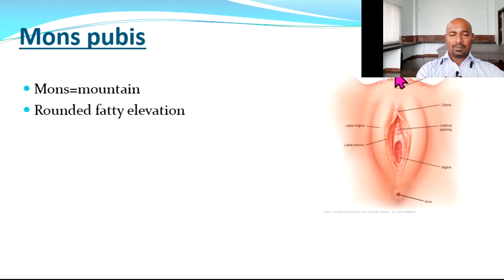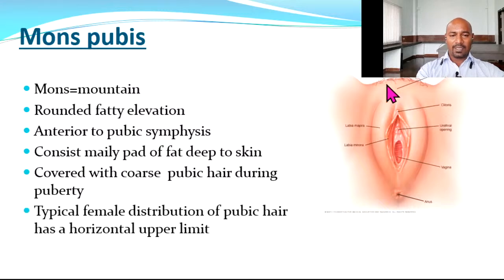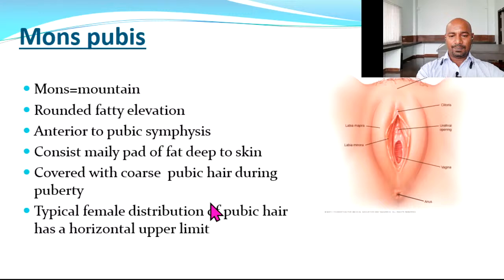Mons pubis literally means mountain. It is a rounded fatty elevation anterior to the pubic symphysis, consisting mainly of a pad of fat deeper to the skin, and is covered by coarse pubic hair during puberty. Till puberty it is devoid of terminal hair, but during puberty the hair follicles undergo maturation. Typical female distribution of hair has a horizontal upper limit, whereas males have a triangular or diamond-shaped limit.